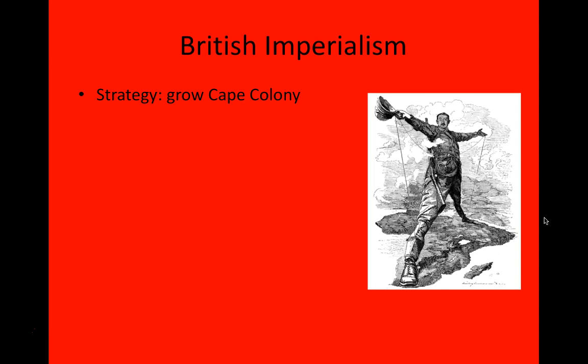The strategy that Britain had for South Africa was to vest a lot of power in the Cape government and let it expand under the leadership of people like Rhodes. However, the Cape government proved to be not as strong as the most ardent British imperialists had anticipated, and this strategy only had a very limited effect.